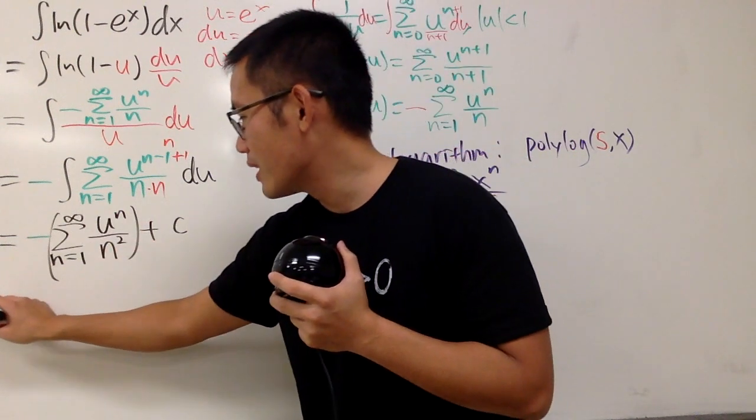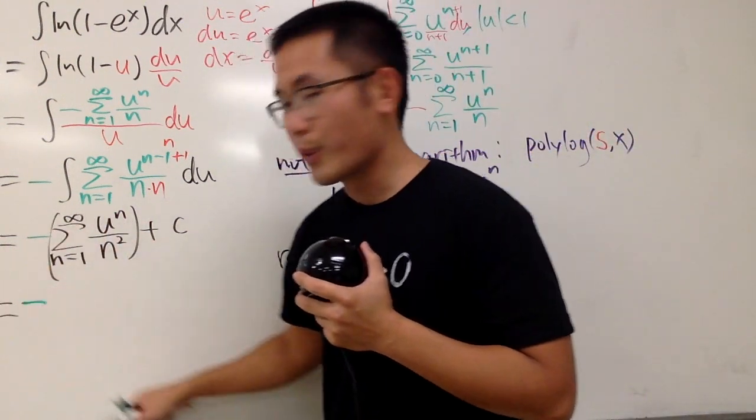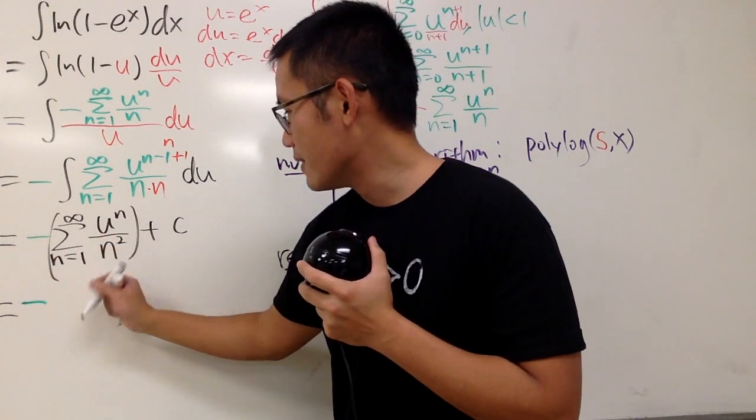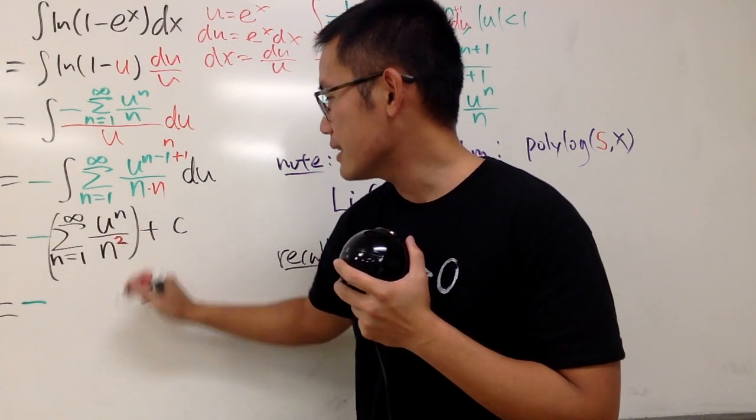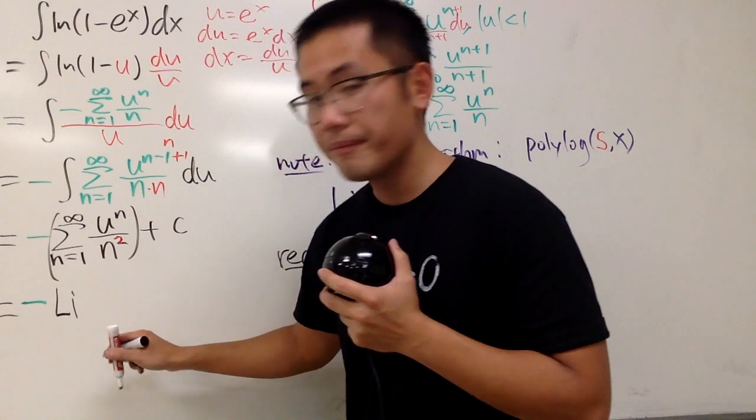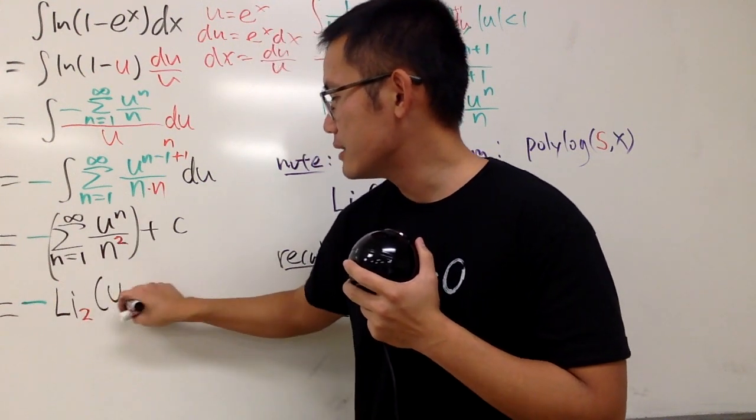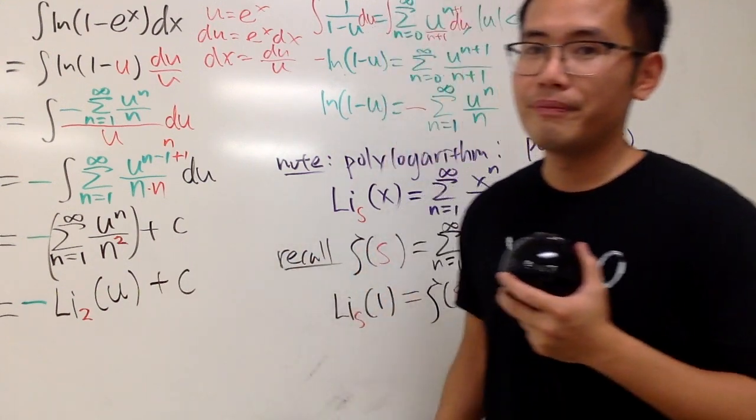So, here we go, this right here is equal to, I'll still keep the negative in green, right? And here we have the series, but notice that, again, this right here is our index, which is li, and we have the little 2 right here, and the input is the u, like this. Very nice. And then, of course, we have the plus c. Are we done, though?